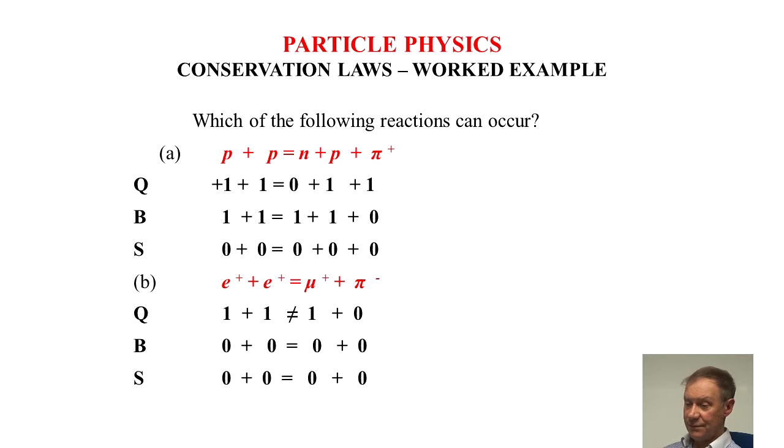From the baryon number, proton has one, proton has one, neutron is one, so two equals two. The pi plus has no baryon number, so two equals two, so that's possible.